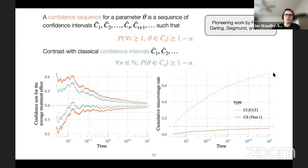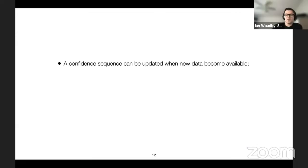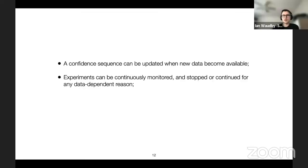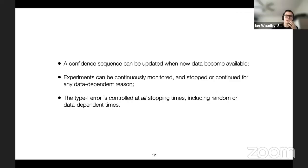The takeaway is that confidence sequences can be updated when new data become available. You can run an experiment, continuously monitor it, and stop or continue for any data-dependent reason. No matter when you stop — whether at a random or data-dependent stopping time — the type one error is controlled, which is something we don't enjoy with classical confidence intervals.